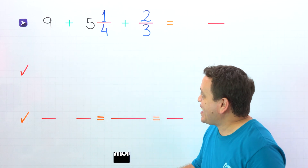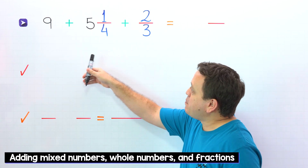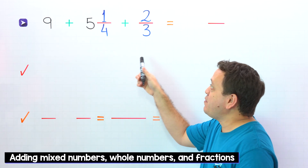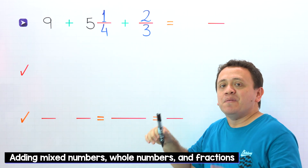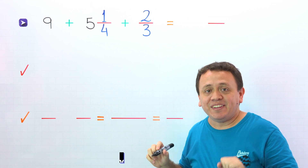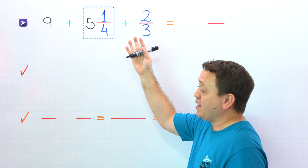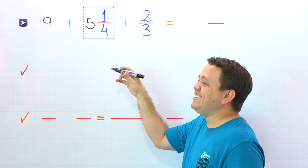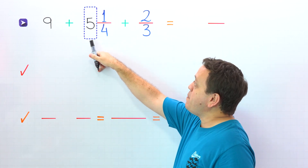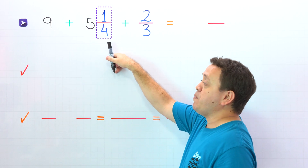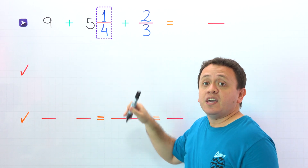Hi! Today we're going to take a look at how to add mixed numbers, whole numbers and fractions. Before getting into it, we need to remember that a mixed number, like this one, is the sum of a whole number and a proper fraction.